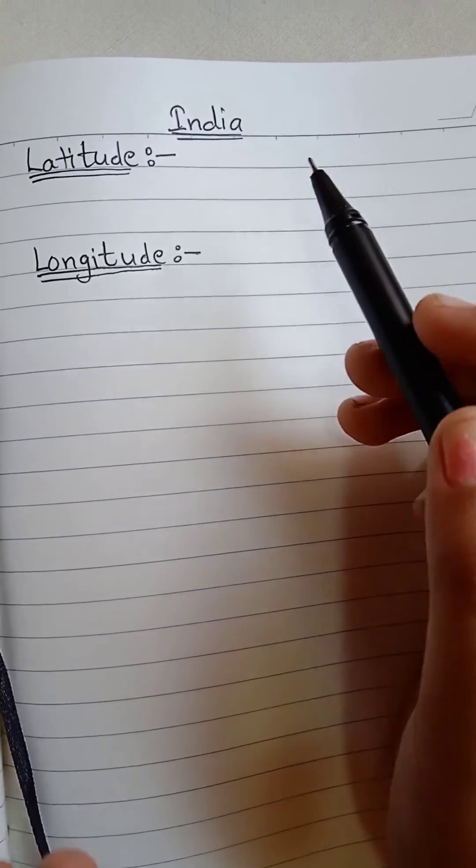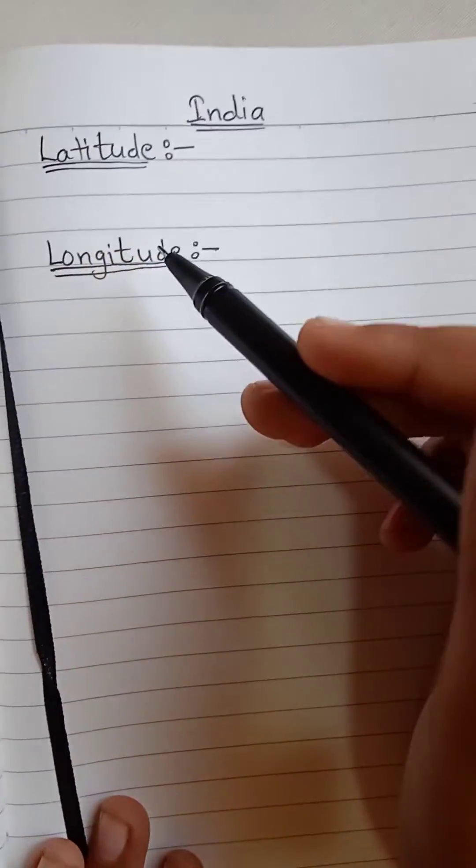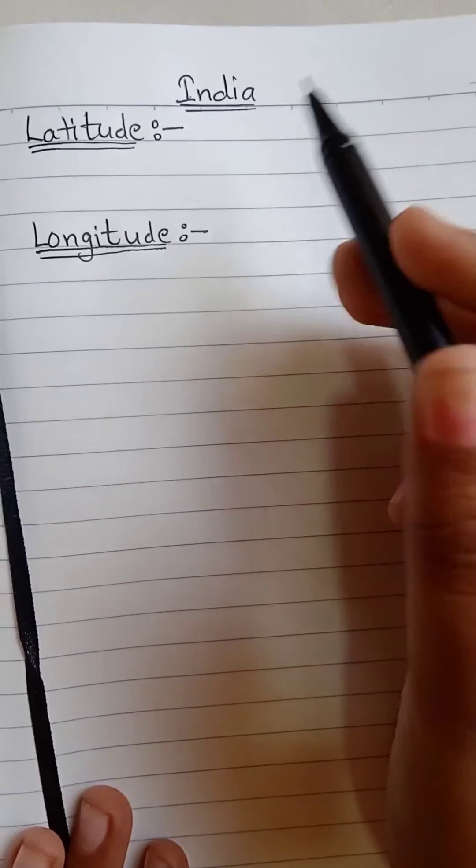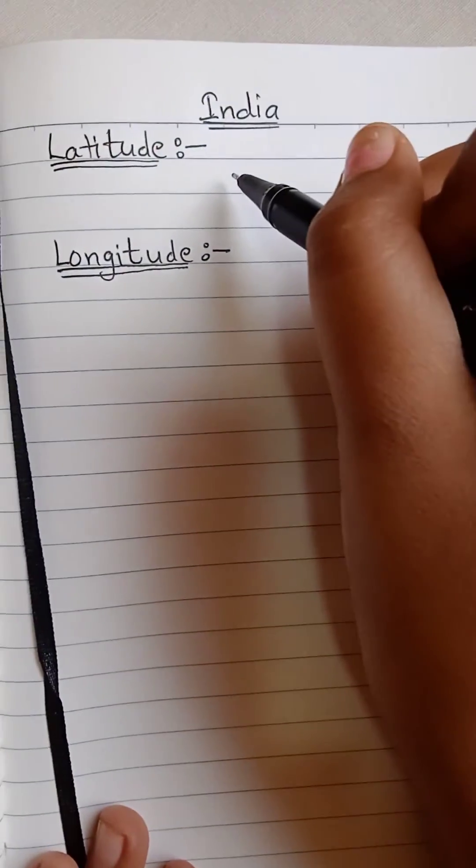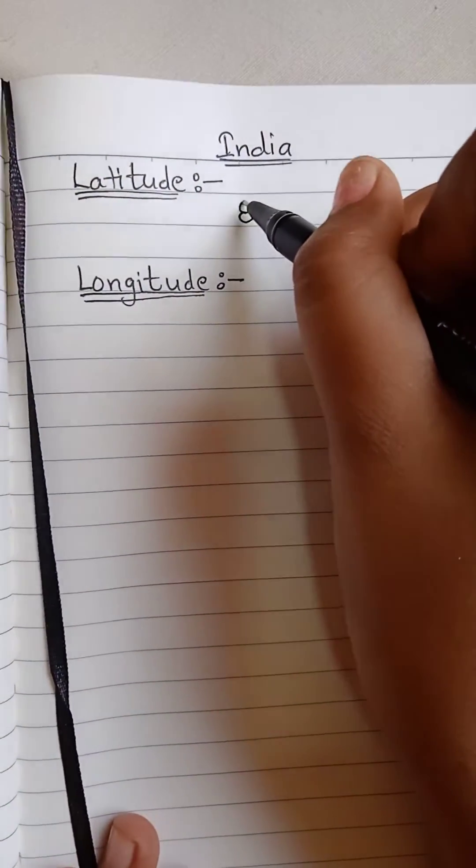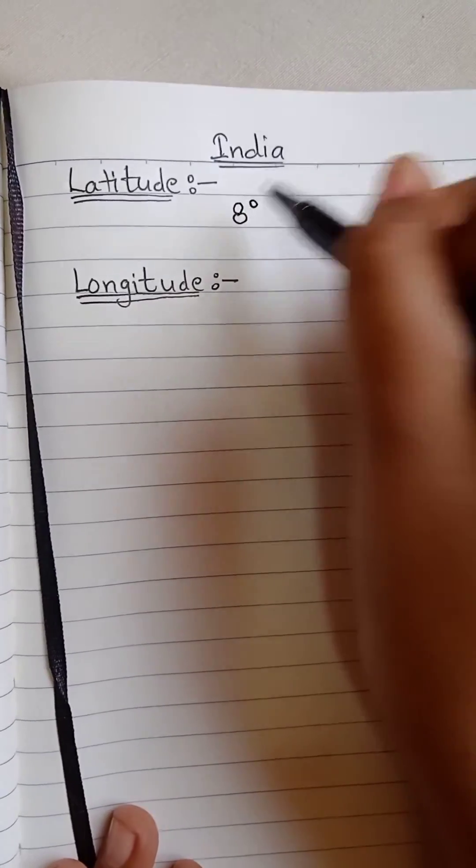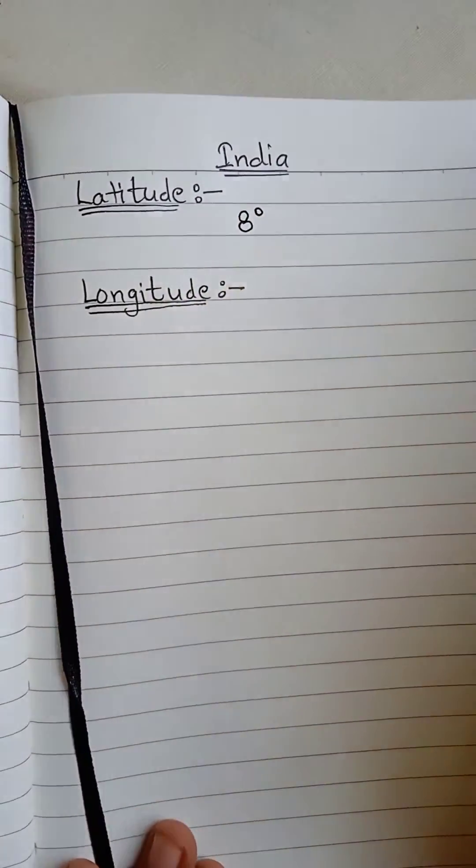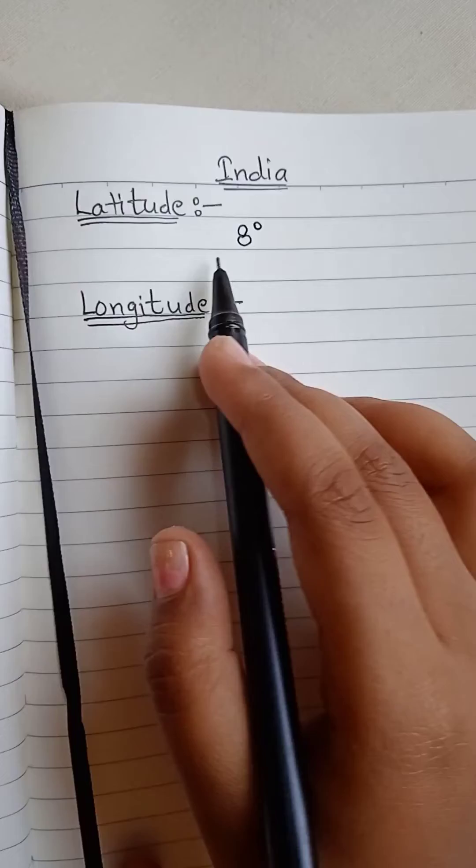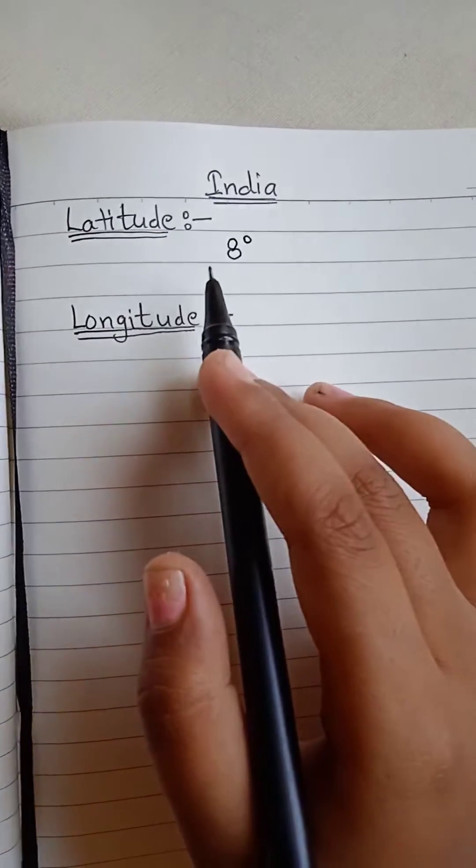Hello friends, today we are going to learn the latitudinal and longitudinal extent of India with a very easy trick. So first you have to remember just the 8 degrees, so after that you can make out the latitudinal extent and the longitudinal.